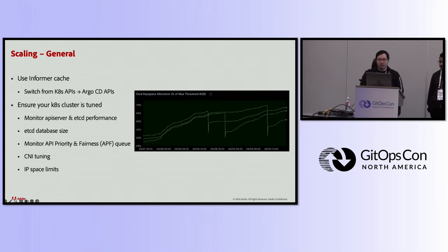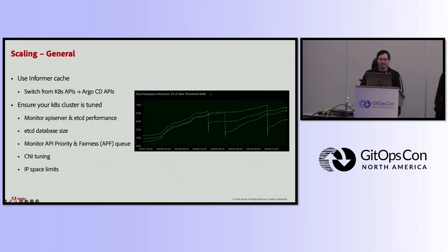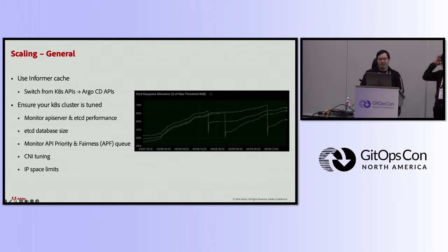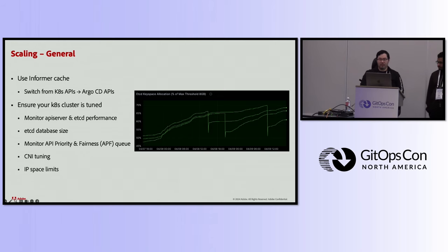Some additional general tips: first, make sure you use an informer cache where possible. We switched from using the Kubernetes APIs to Argo CD APIs, as it gave us an informer cache for free and we didn't need to maintain our own — this was a resolution to one of our big production outages. Also ensure your Kubernetes cluster is healthy and tuned correctly. Monitor your API server and etcd performance, monitor your etcd database size, monitor the APF queue to ensure things aren't falling into it, perform any CNI tuning as required, and ensure that you have enough IP space for the cluster as well as for all your pods.